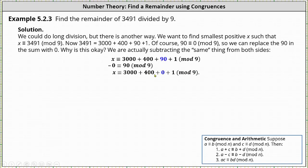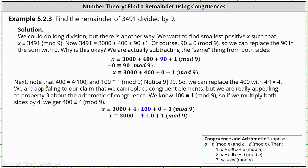Now let's work with the 400. Note that we can write 400 as 4 × 100, and 100 ≡ 1 (mod 9) because when 100 is divided by 9, the remainder is 1 - or equivalently, since 9 divides 99 and 100 is one more than 99. So we can replace 400 with 4 × 1 or 4.